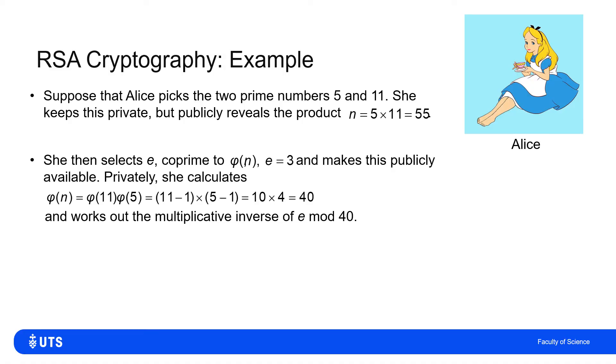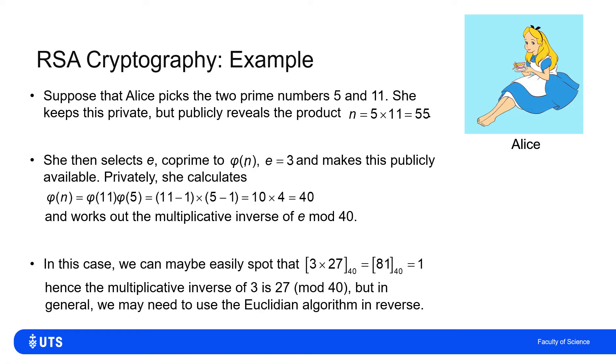So only Alice knows that, and only Alice then can work out quickly the multiplicative inverse of 3 mod 40. Now in this case, it's actually very easy to spot the multiplicative inverse, because 3 times 27 is 81, and 81 mod 40 is 1, because 81 is obviously two lots of 40, with a remainder of 1.